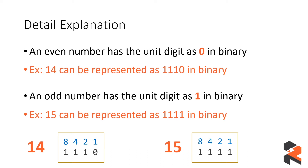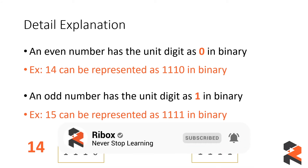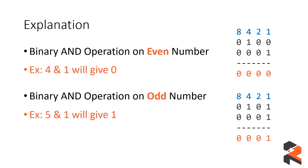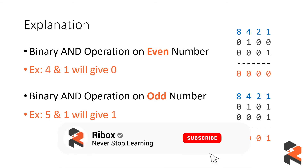The key concept we'll use is that in binary, an even number always ends in 0 at the unit bit, while an odd number always ends in 1. So performing an AND operation of any even number with 1 always results in 0, and for an odd number it always results in 1. We will use this to convert all numbers to zeros and ones.